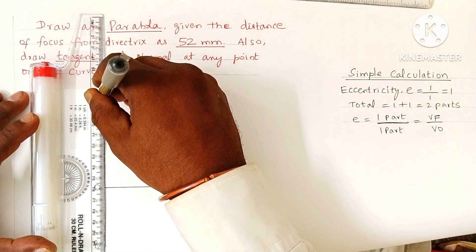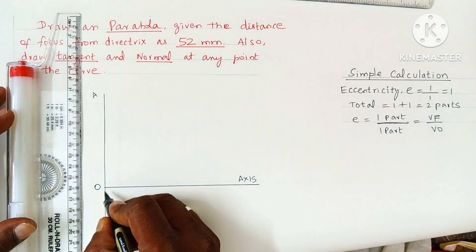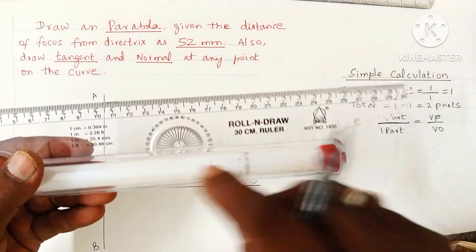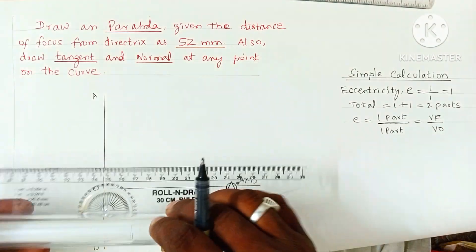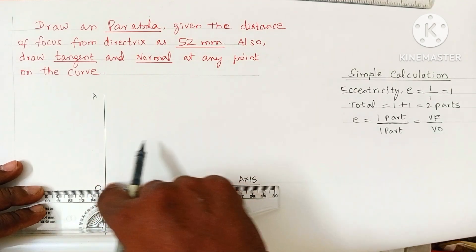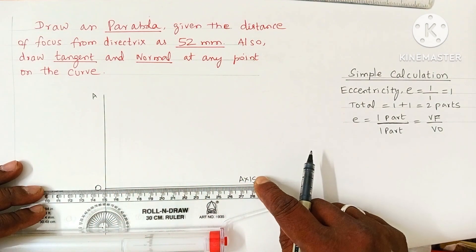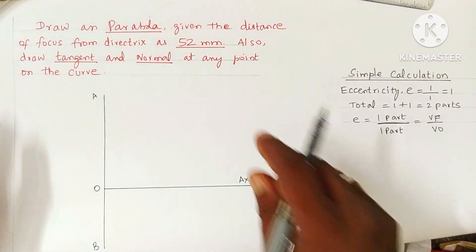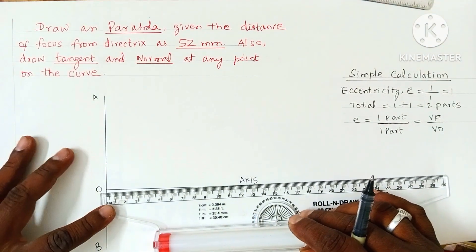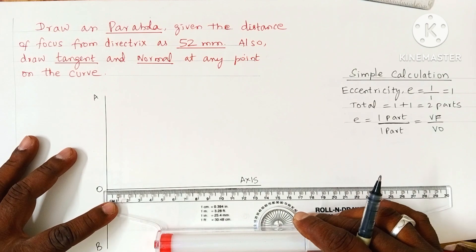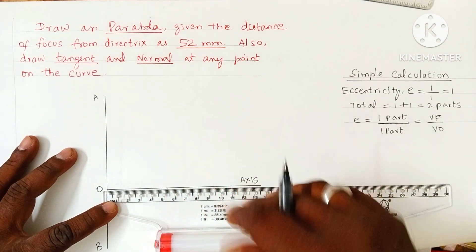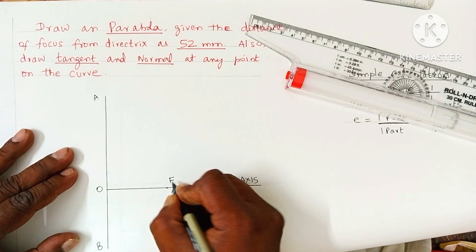First, draw one vertical line called the directrix. At anywhere on that vertical line, mark O. Draw a horizontal line at point O — this will be the axis of the parabola. Now, the distance of focus from the directrix is given as 52 mm, which is 5.2 centimeters. Measure 5 centimeters plus two small divisions. This point will be F, standing for focus.